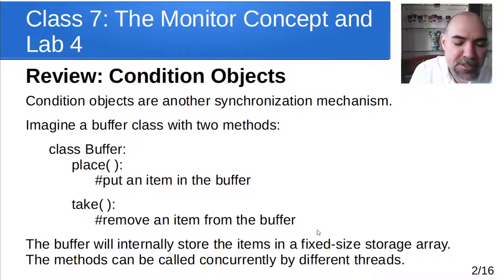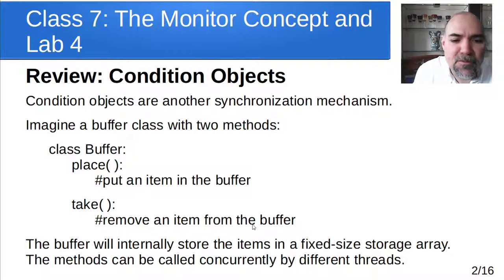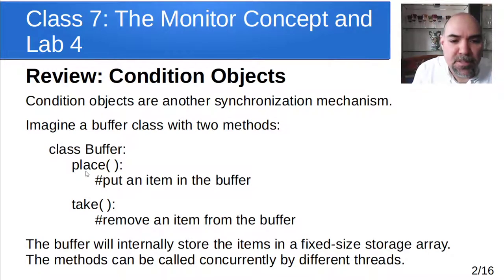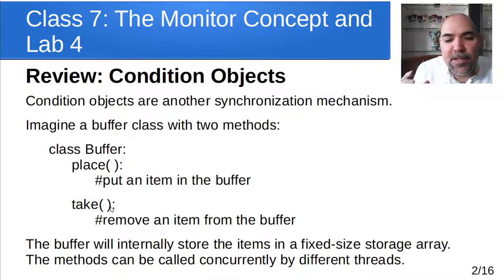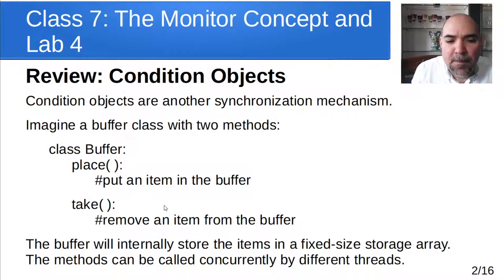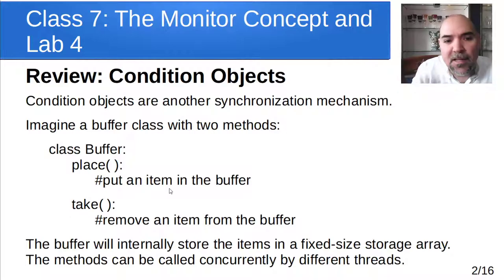The key difference is that if you imagine you have some sort of class like this, it's got two methods: place and take. You want to put an item in the buffer with place, you want to take an item out of the buffer with take. If there's a fixed maximum size that the buffer can be, then when you go to place something into it, it could be full and needs to wait. And on take, if the buffer is empty, it's completely exhausted and you try to take something out of it, it needs to stop and wait. So we need a way to still protect access to the buffer that enforces mutual exclusion.